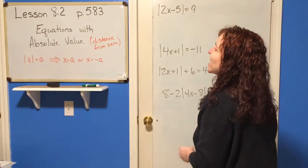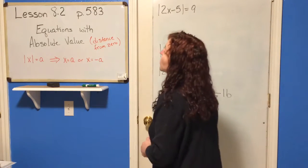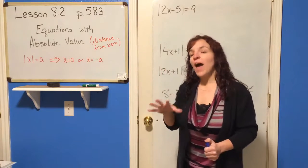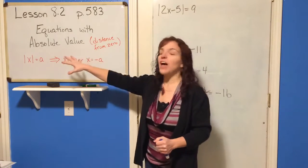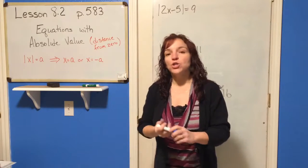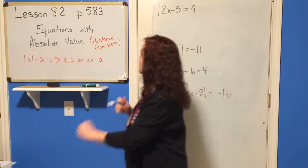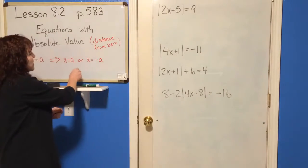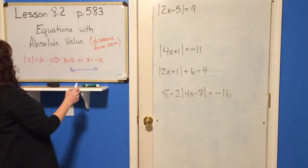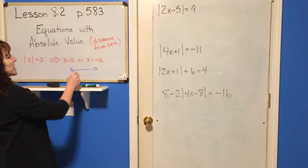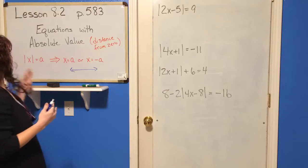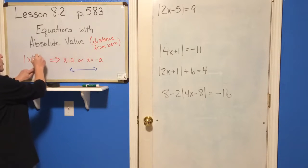Section 8.2: equations with absolute value. So you have to remember that absolute value means the distance from zero. So if we've got the absolute value of x equals a — let's put a number in — so the absolute value of x, let's say, is 4.